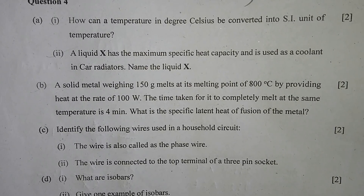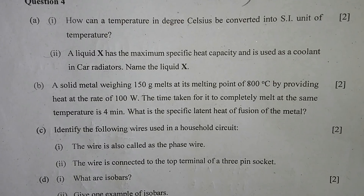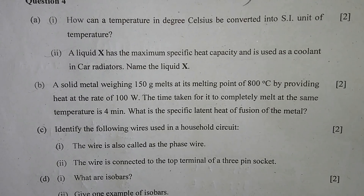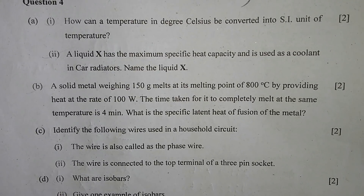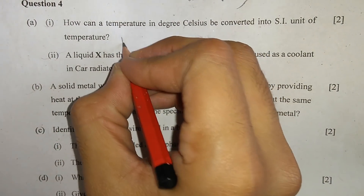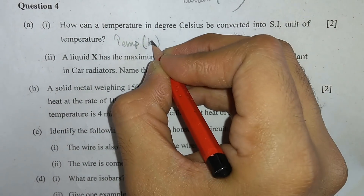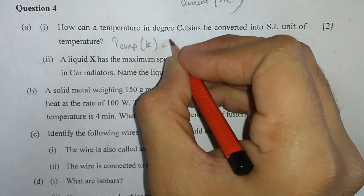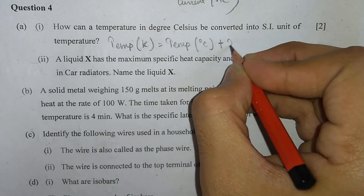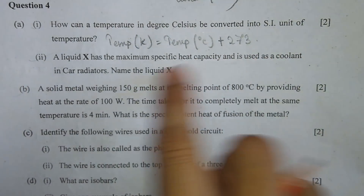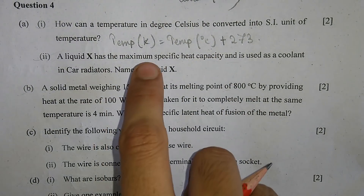Question 4, part A, number 1: How can a temperature in degree Celsius be converted into the SI unit of temperature? Temperature in Kelvin equals temperature in degree Celsius plus 273. That is how a temperature in degree Celsius is converted to degree Kelvin.